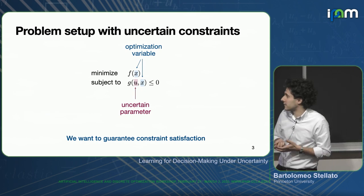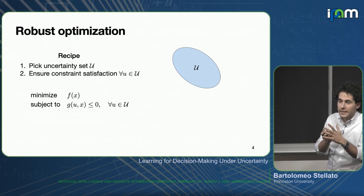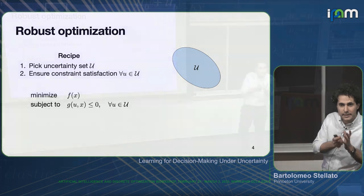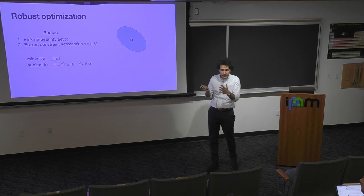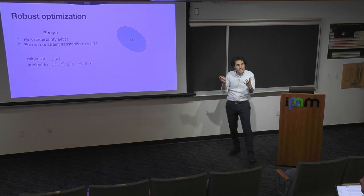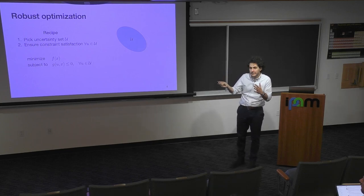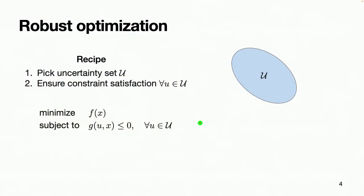One typical method to deal with uncertainty is to build an uncertainty set. Robust optimization is a very commonly used technique: you pick an uncertainty set where you assume all your realizations live, and then you immunize against all the realizations of the uncertainty inside this set. The constraints need to be satisfied for every u that lives in this uncertainty set, and for many commonly used uncertain parameters this is a very tractable way to model uncertainty.